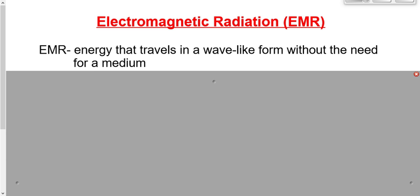Something to travel through. Electromagnetic radiation is energy that travels as a wave. It doesn't necessarily have to travel through something, unlike a mechanical wave, which also carries energy but needs a medium to travel through.